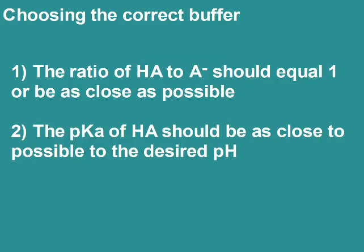You also need to be able to choose the correct buffer. When choosing a buffer, you want the concentration of your acid and base to be as equal to 1 as possible. And we want to choose the pKa closest to the desired pH, because if we have a pKa close to the desired pH, our ratio of acid to base will be closer to 1.